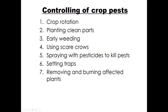Now, ways of controlling crop pests. One is by crop rotation. Two is by planting clean parts of a plant — meaning look at the parts which are not infected with a disease and then plant them. Just as I told you about diseases — look for a plant which is not infected and then plant it.